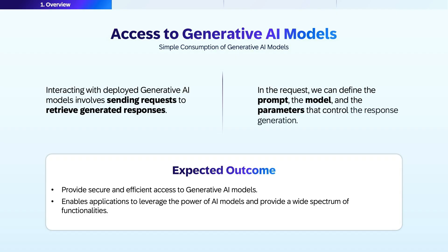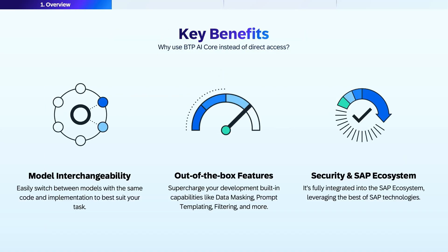Interacting with generative AI models is straightforward but requires a structured approach. The process involves sending requests that define the prompt, the model, and relevant parameters to generate responses. By leveraging SAP AI Core, we provide secure and efficient access to AI models, enabling applications to harness AI's diverse functionalities from automation to decision support. We will see how to optimize this process throughout the session.